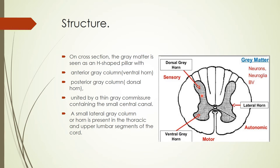It has an anterior gray column which is called ventral horn — this is the motor horn — while the posterior gray column is also called dorsal horn and it is sensory in function. Both are united by a thin gray commissure containing a small central canal. A small lateral gray column or horn is present in some segments of the spinal cord, extending from the first thoracic to first or second lumbar spinal segments.